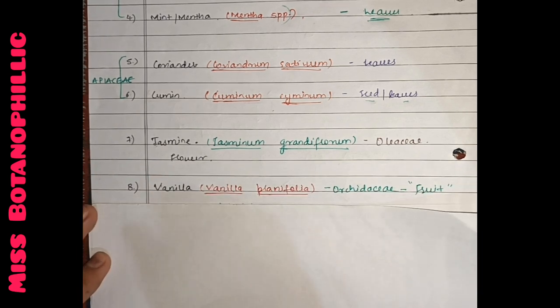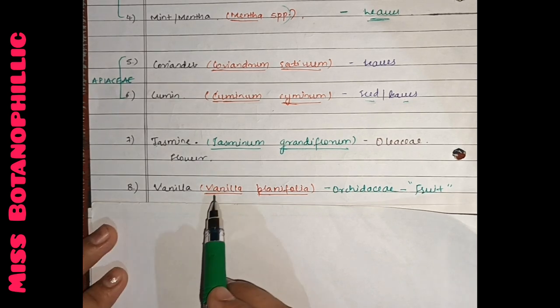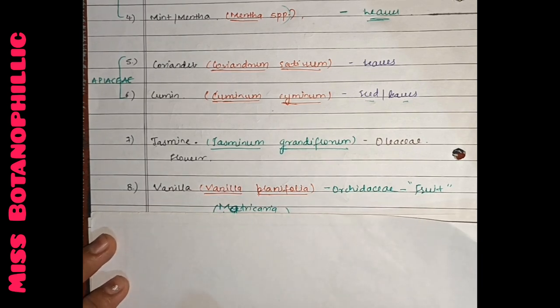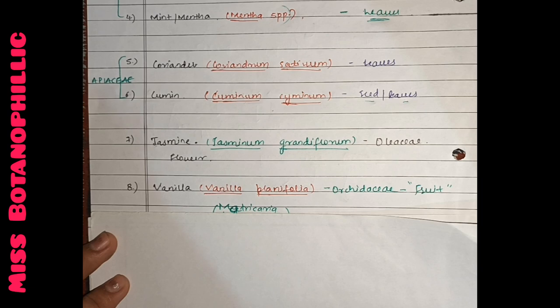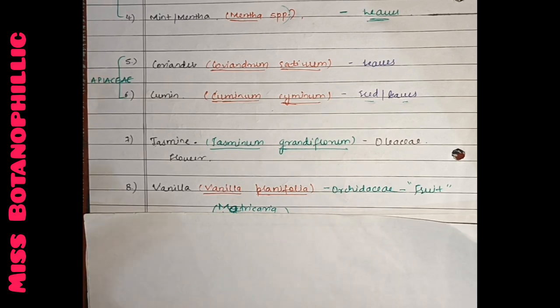Then we have vanilla. Vanilla planifolia, which is the Orchidaceae family. Vanilla's active compound is called vanillin. It extracts from fruits. Vanilla extracts from fruits of vanilla planifolia.